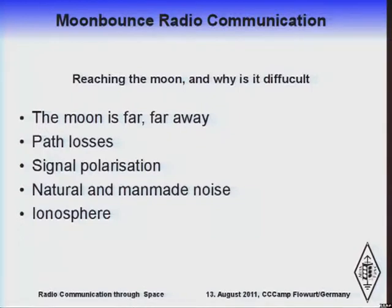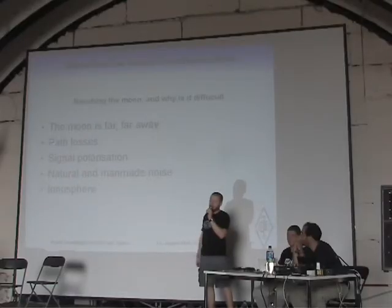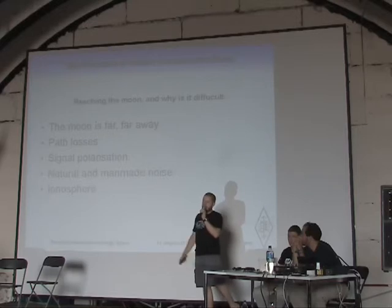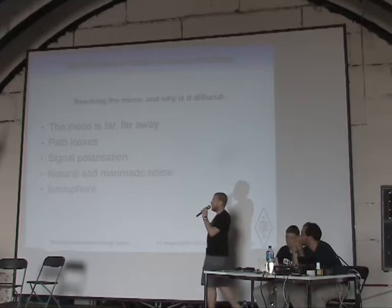We want to reach the moon. It's quite far away — about 380,000 kilometers on average, a little closer or farther at different times of year. You can see it when it's up during the night, so you might be able to hit it with your radio signal, but it's still far away and you have a lot of path loss. The path loss for the moon and back gives you about 250 decibels of loss — that is a very, very small number.